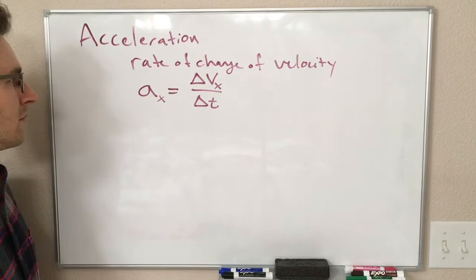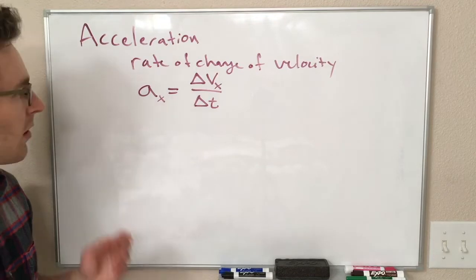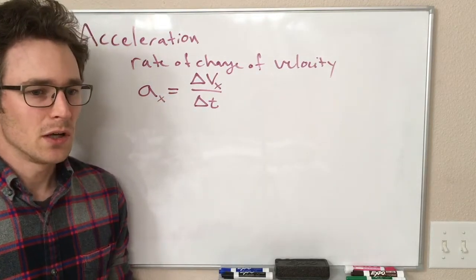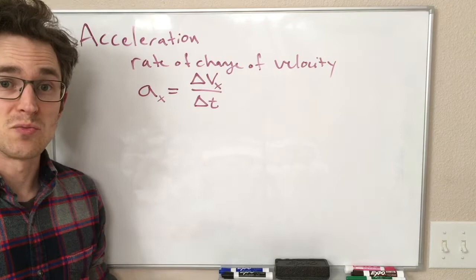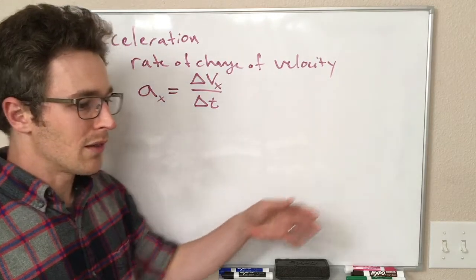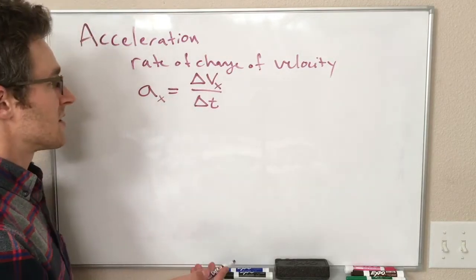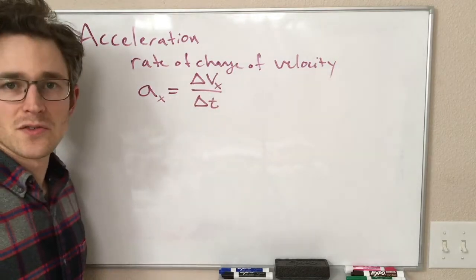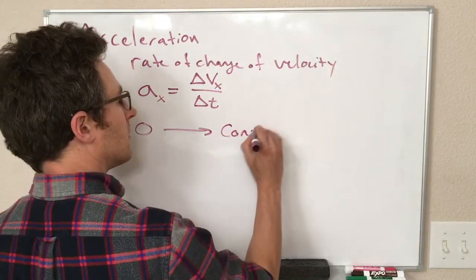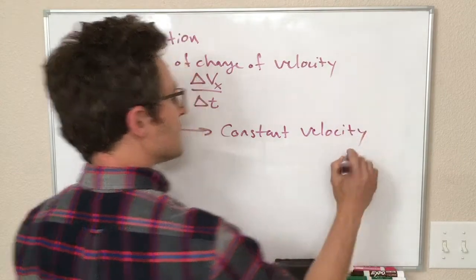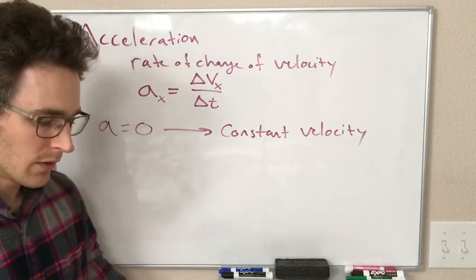So this is our working definition of acceleration for now: the change in velocity over the change in time. Anytime we have a change in the velocity of an object, it has undergone acceleration — it had an acceleration that was not zero. If we have an object moving with constant velocity, delta V is zero, and zero over whatever gives us an acceleration of zero. So if A equals zero, that just means we have a constant velocity.